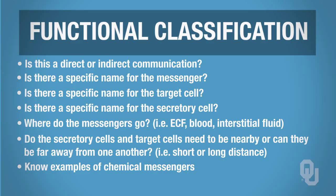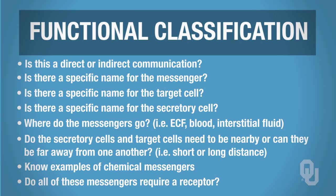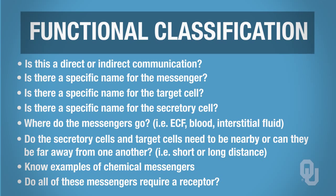You should know examples of chemical messengers that operate as paracrine transmitters, neurotransmitters, hormones, or neurohormones. And importantly, consider whether all these messengers actually require a receptor — a very important concept.